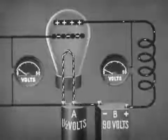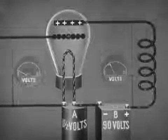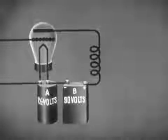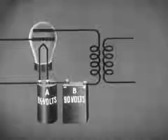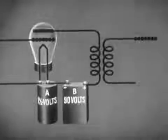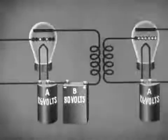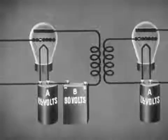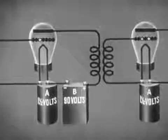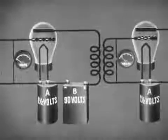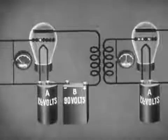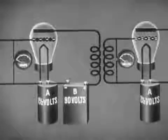These voltage variations in the primary coil are transferred by induction to the secondary of the transformer, which is connected in the grid circuit of the next tube. Thus, the small changes in voltage on the grid of the amplifying tube have brought about large variations in the voltage impressed upon the grid of the next tube. Thus we can say that the tube has acted as an amplifier.